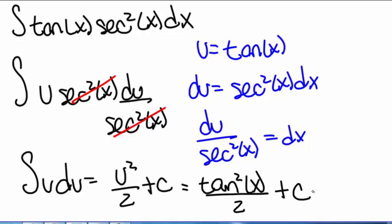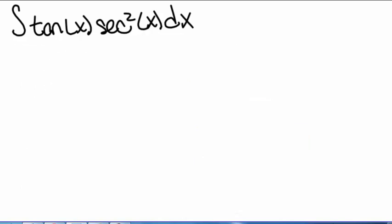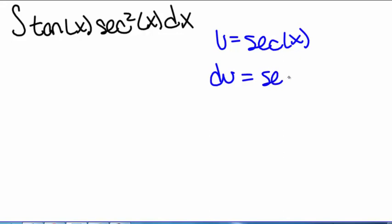Now there's also another way we could have gone about solving this. What if instead we tried the substitution u equals secant of x? Then du equals secant of x times tangent of x dx.